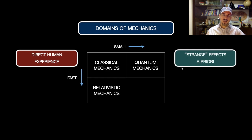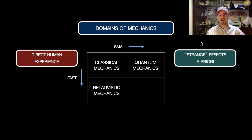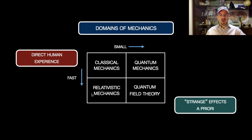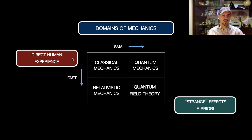Again, strange effects at least a priori appear in quantum mechanics. It is hard to have a feeling of its predictions. When you are dealing with very small objects under very high velocities, you need quantum field theory — and again strange effects appear. We can say that non-relativistic quantum mechanics and relativistic quantum mechanics are the two domains here.